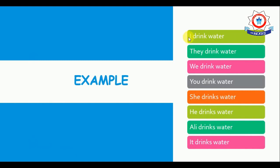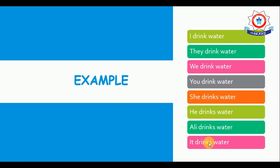Let's take an example. 'I' is the subject, 'drink' is the first form of verb, and 'water' is the object: 'I drink water.' With I, we, you, and they, we do not add S/ES: 'They drink water. We drink water. You drink water.' Whereas with she, he, singular noun, and it, we add S or ES: 'She drinks water. He drinks water. Ali drinks water. It drinks water.'